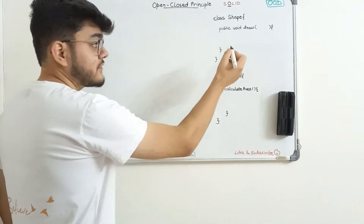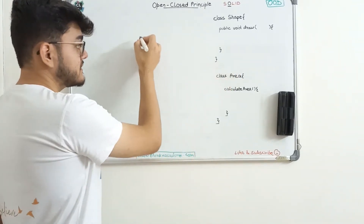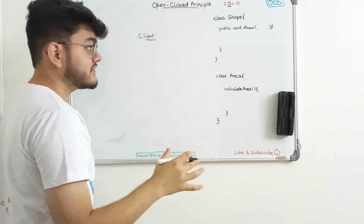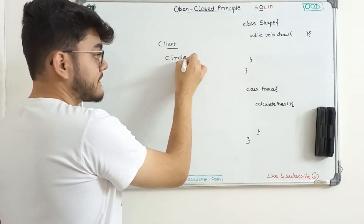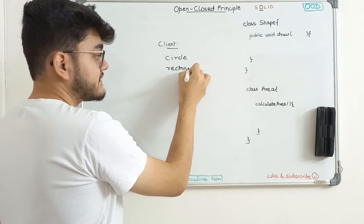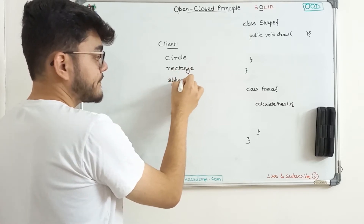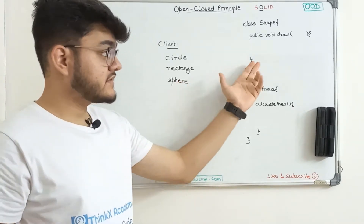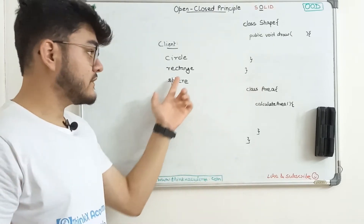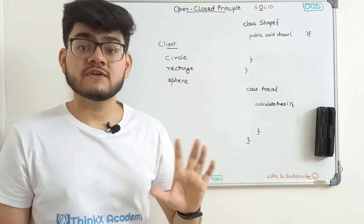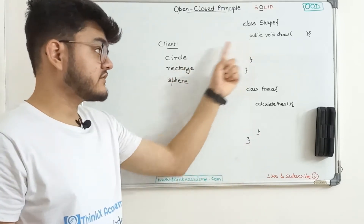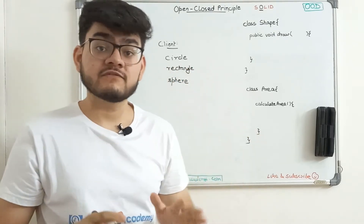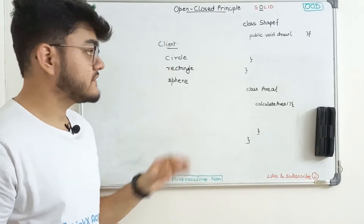Initially, this draw function was not implemented, and now the client has more requirements. The client wants you to implement the draw function in such a way that it will be able to draw a circle, maybe a rectangle, and let's say a sphere also. So you as a software developer want to implement this draw function so that it draws based on the user's selection — if the user selects circle, it draws a circle; if rectangle, it draws a rectangle.